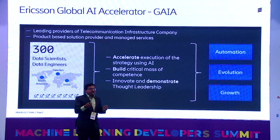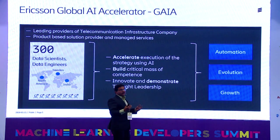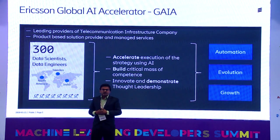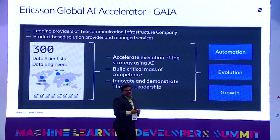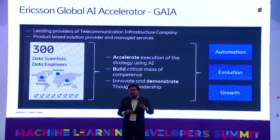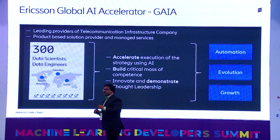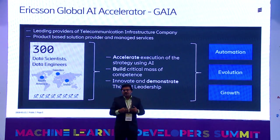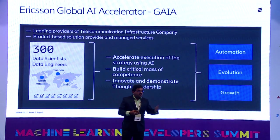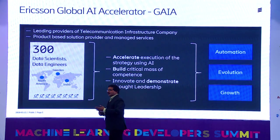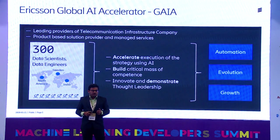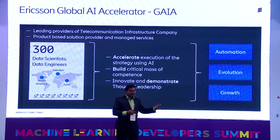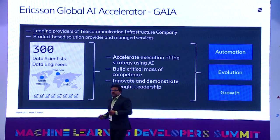A basic introduction: most of you know Ericsson as a B2B company providing 2G, 3G, 4G, and now 5G technology, and also Internet of Things. The specific unit I am representing is a Global AI Accelerator. What we do is look across the organization for how we can leverage new automation use cases, be on the thought leadership front, and enhance the company's portfolio — not just for our organization but for our operators as well. We are already around 230 people and targeting 300, with about 100 from India, and spread across Sweden and the US.